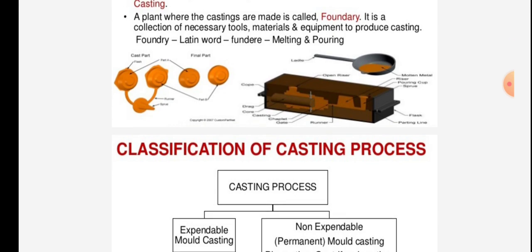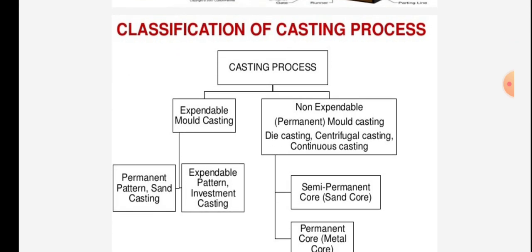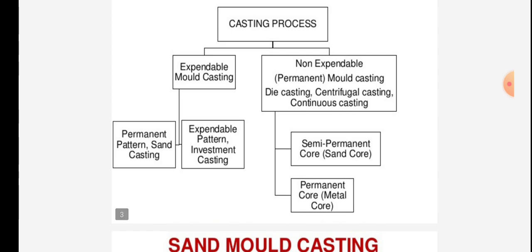The figure shows the casting process with cast parts and the process illustrated. Casting processes are classified into two main types: expandable mold casting and non-expandable or permanent mold casting, which includes die casting, centrifugal casting, and continuous casting.